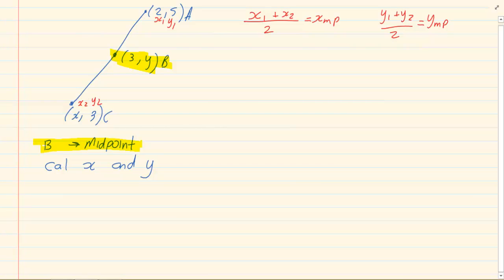Now what we do is we substitute the information we have. We have x1 is 2 plus we don't have x2, so we put our x, all over 2 equals—we have the x midpoint. It's equal to 3.